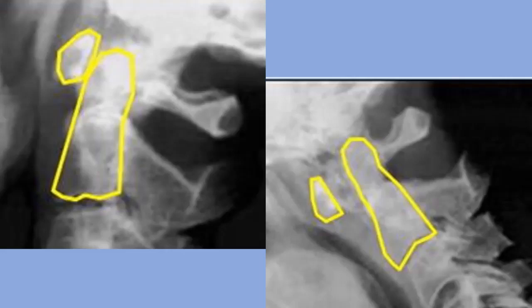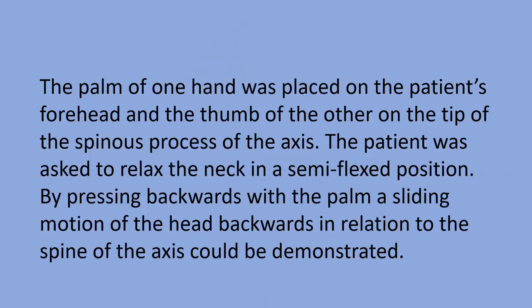What I want you to remember from this slide is the eight millimeter threshold for cord compression — it will be important when we discuss the Sharp-Purser test in terms of symptom reduction. I am reading this directly from the Sharp-Purser paper so there can be no quibble about misquoting it. The palm of one hand was placed on the patient's forehead and the thumb of the other on the tip of the spinous process of the axis. The patient was asked to relax the neck in a semi-flexed position. By pressing backwards with the palm, a sliding movement of the head backwards in relation to the spine of the axis could be demonstrated. In this case, a positive is a feeling of translation.